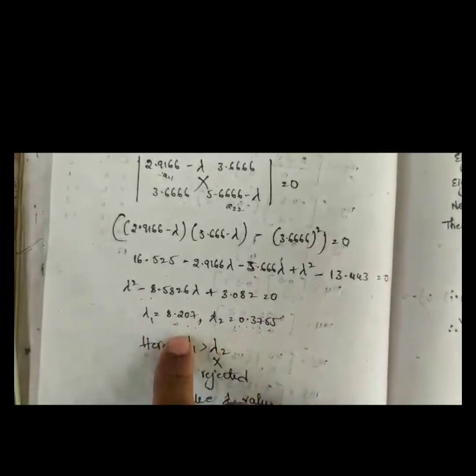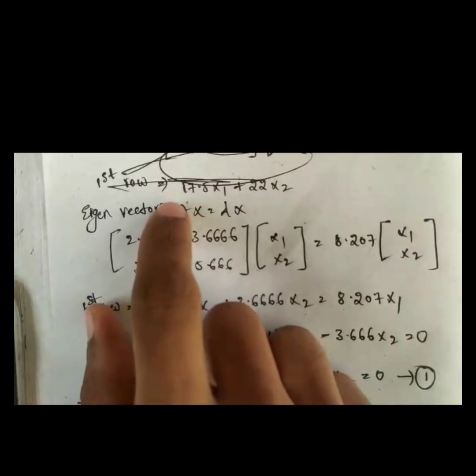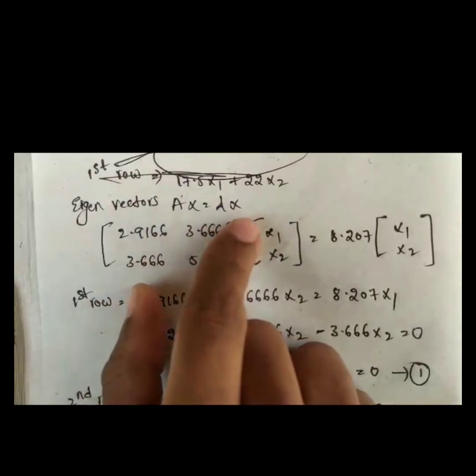Solving this polynomial using a calculator, we get lambda₁ equals 8.207 and lambda₂ equals 0.3755. Since lambda₁ is greater than lambda₂, we reject lambda₂ and take lambda₁ equals 8.207 for the execution of our problem.